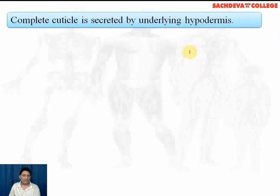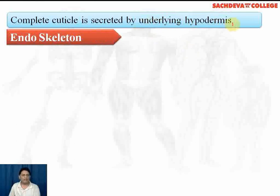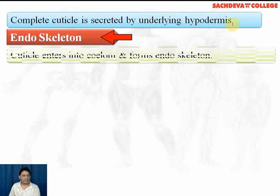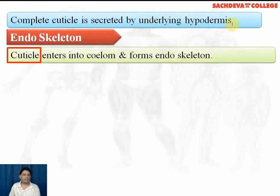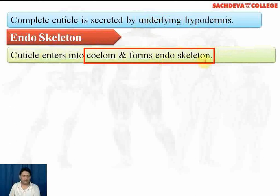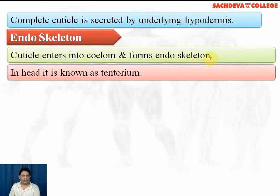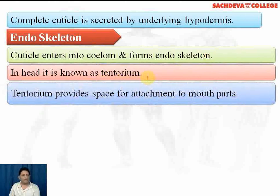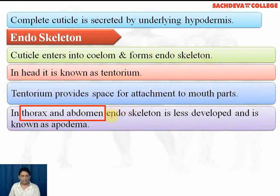The complete cuticle is secreted by the underlying hypodermis. The cuticle enters into the body and forms the endoskeleton. The endoskeleton of the head is called the tentorium, which provides space for attachment of mouth parts.